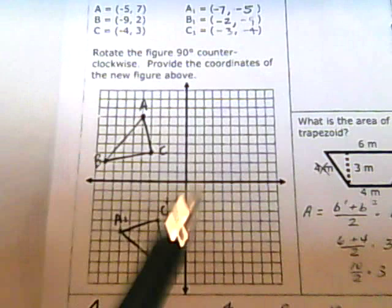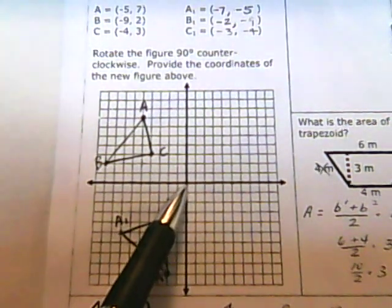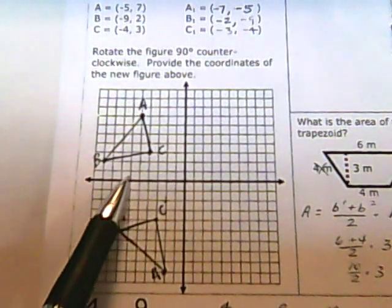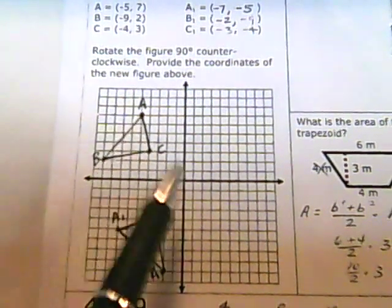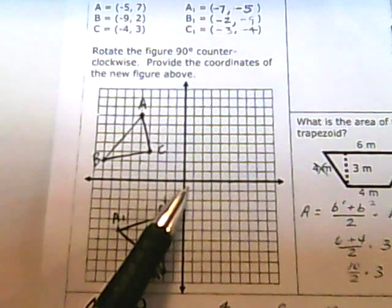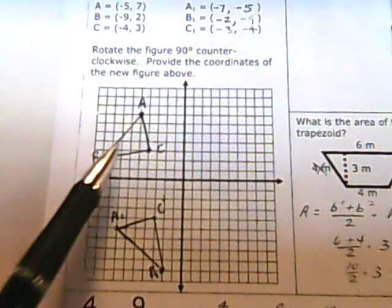So just to recap, you always start here. Negative 5 would be 1, 2, 3, 4, 5, and positive 7 is 1, 2, 3, 4, 5, 6, 7 going up. All of these are negative, positive, so they're all in this quadrant. You start by going left, then going up.